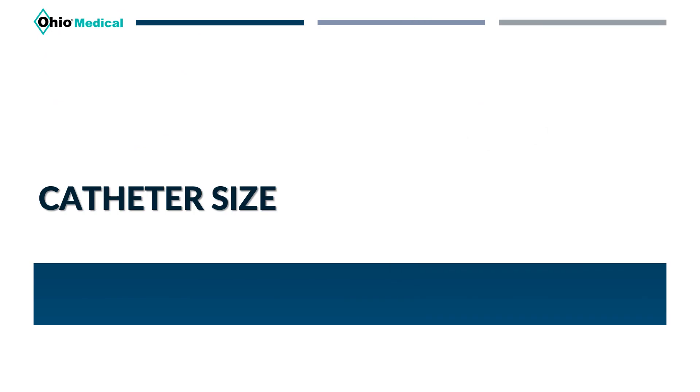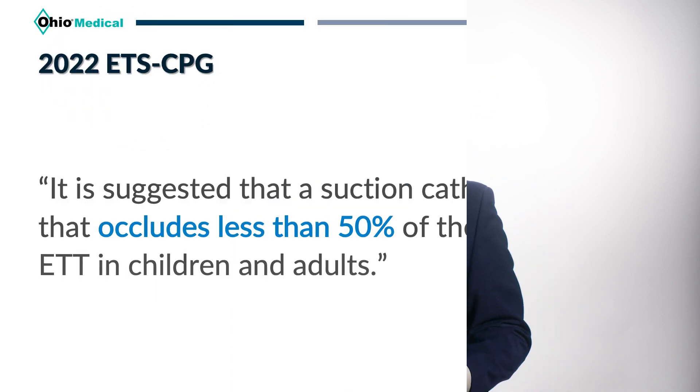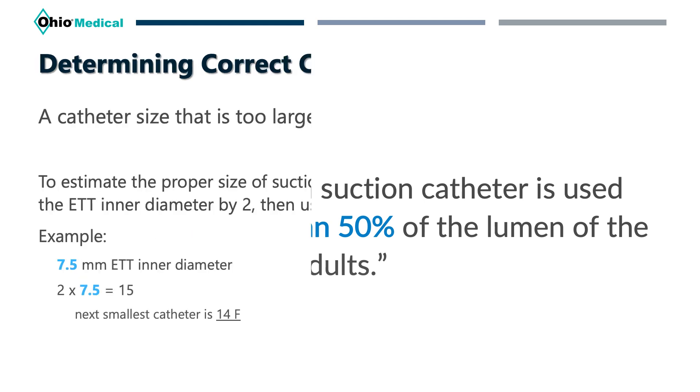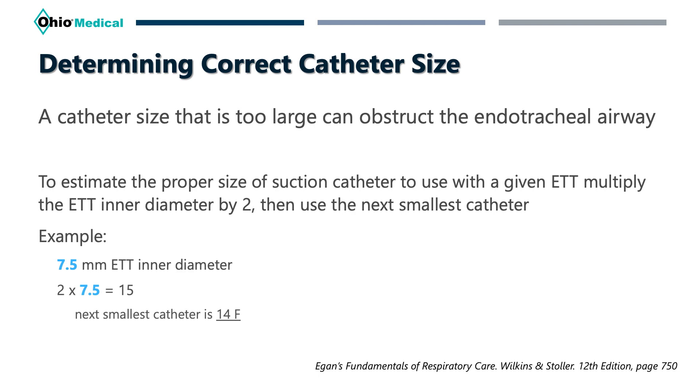Another important aspect to consider is the size of the suction catheter in relation to the size of the artificial airway in place. The CPG states that a suction catheter should occlude less than 50 percent of the inner diameter of the airway in children and adults. If a catheter that's too large is used, it can create significant airway resistance that can potentially lead to airway obstruction. This poses a major problem because the mechanical ventilator will have difficulty ventilating the patient during suctioning, and it's likely that air will be suctioned out of the lungs faster than the ventilator can replace it, leading to atelectasis.